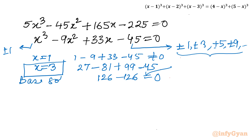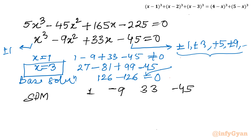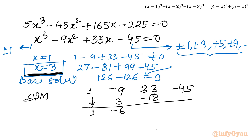We will now use synthetic division (SDM). The coefficients of the cubic equation are 1, −9, 33, −45. Using base solution x=3: bring down 1; 3×1=3, so −9+3=−6; 3×(−6)=−18, so 33+(−18)=15; 3×15=45, so −45+45=0. The remaining coefficients give the quadratic equation x² − 6x + 15 = 0.